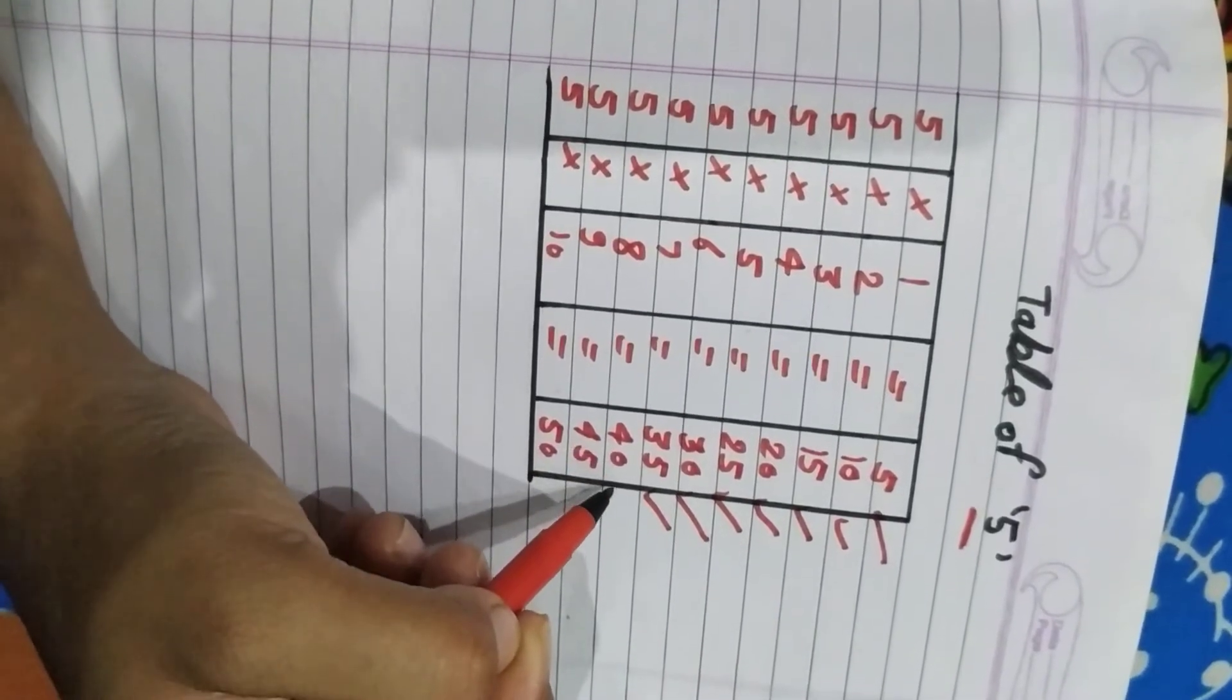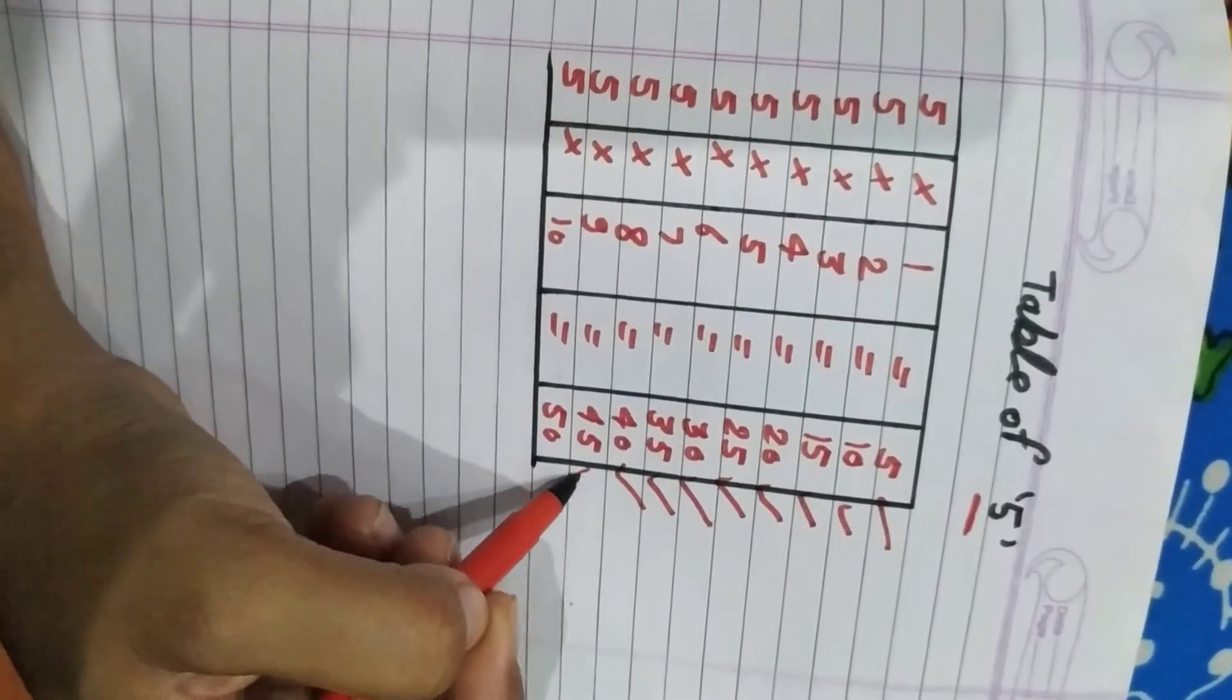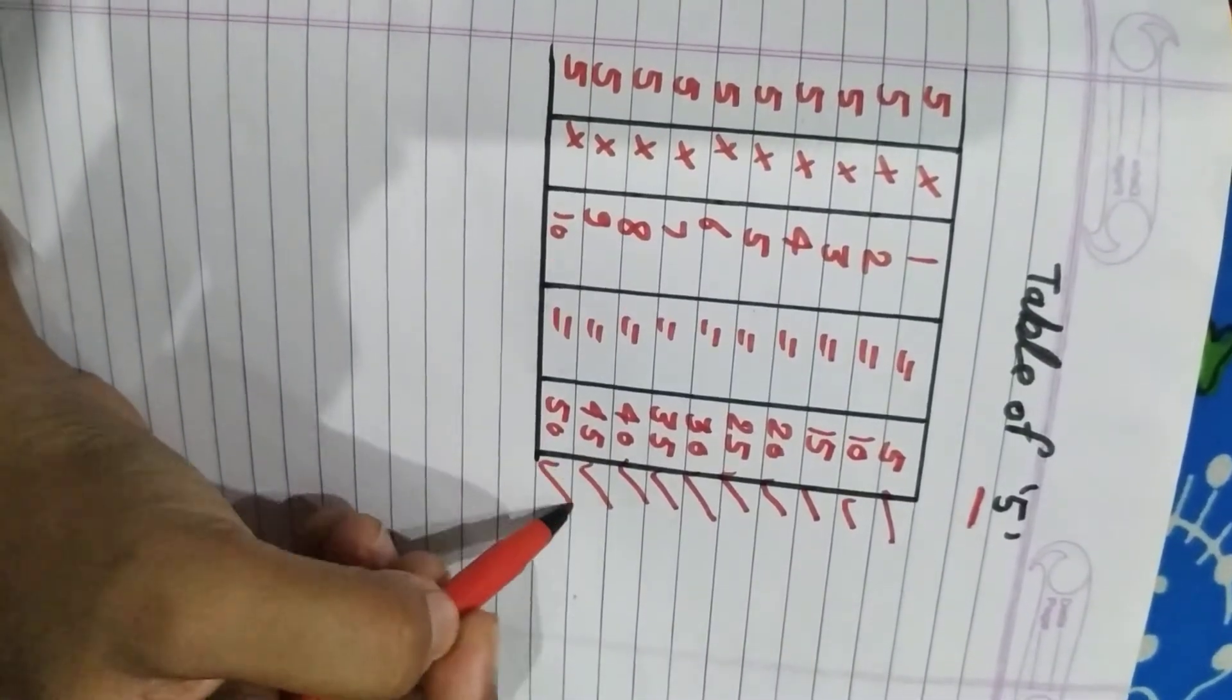Five four ja. Five sorry. Five eight ja forty. Five nine ja forty five. Five ten ja fifty.